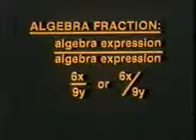So let's start at the beginning with an arithmetic fraction. An arithmetic fraction is one whole number divided by another whole number. The line between them in either form says divided by. 3 over 5 is 3 divided by 5. An algebra fraction is just one algebra expression written over another algebra expression with a line in between to say divided by.